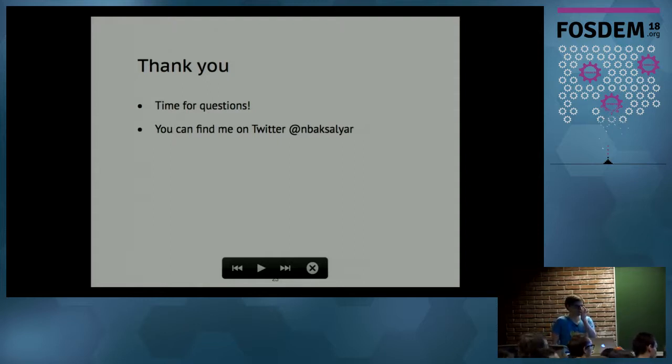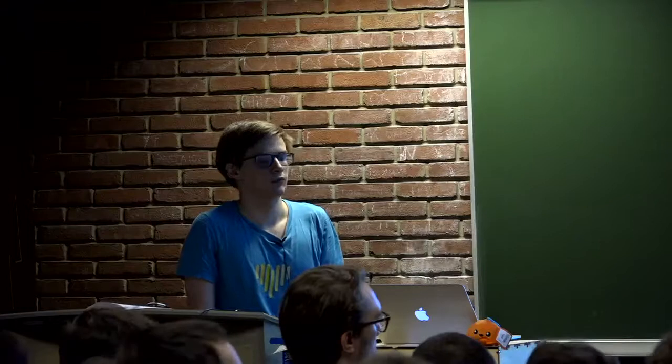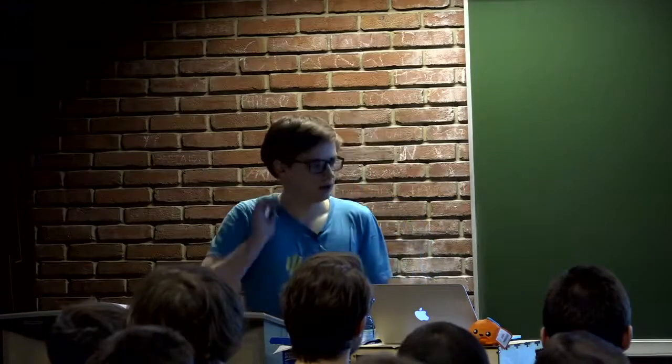Q: Is it possible to manipulate the AST during compile time — for example, while compiling a library, replace some structures during compilation of that same library? A: Yes, you can transform ASTs at compile time — that's essentially what macros do. They take an AST tree and produce another AST tree. Rust provides multiple ways to do this: procedural macros and macros 2.0 both allow you to transform your code to some other representation.